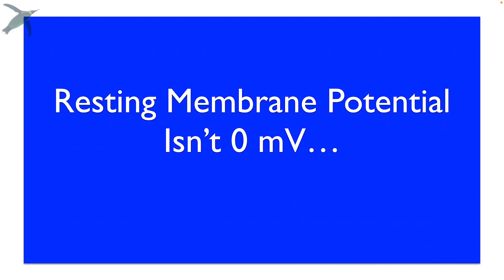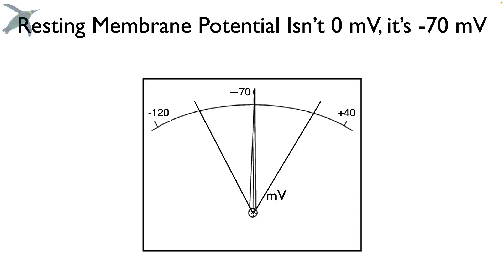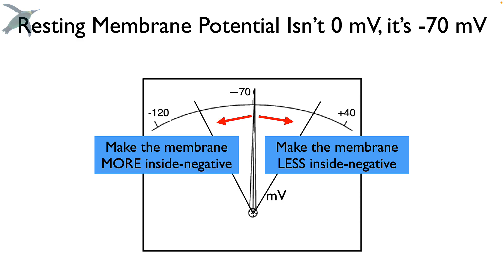Resting membrane potential isn't zero. Remember, it's minus 70 millivolts. But the idea is the same. By the way, zero would be somewhere around here. But there are still only two options. We can make the membrane less inside negative or more inside negative. Now, that's just a complicated way of saying this,